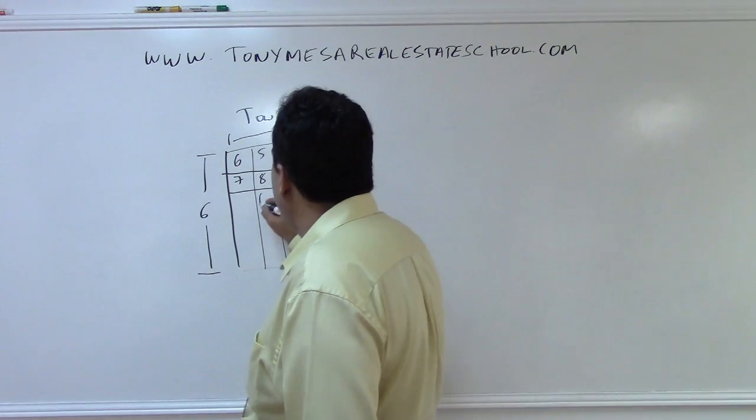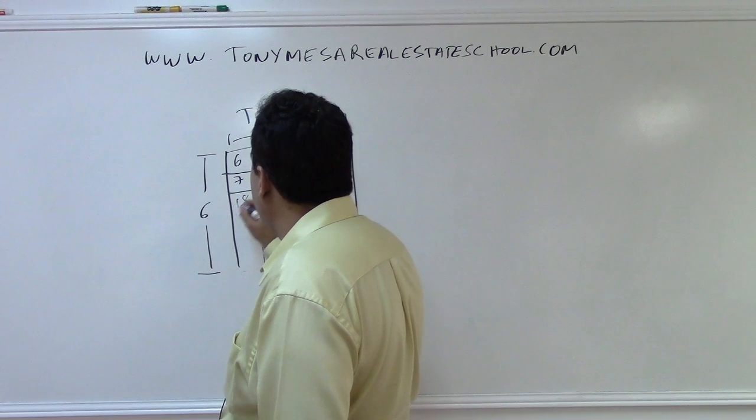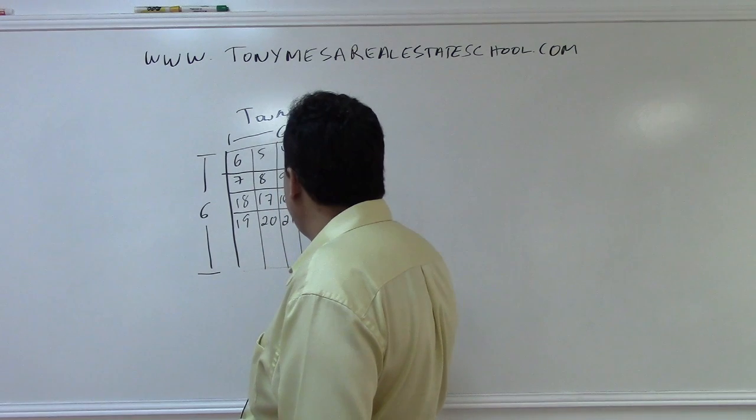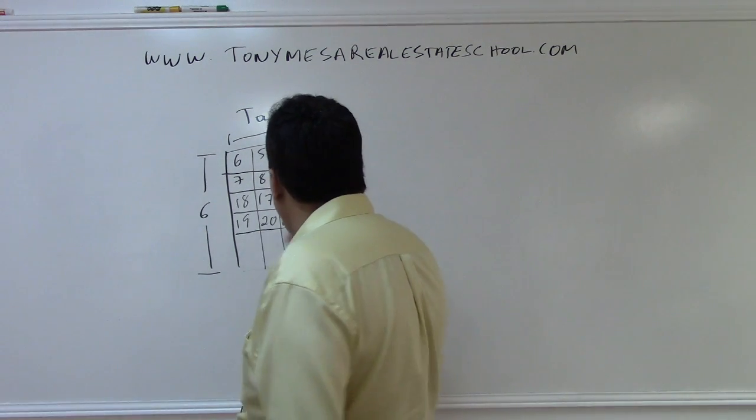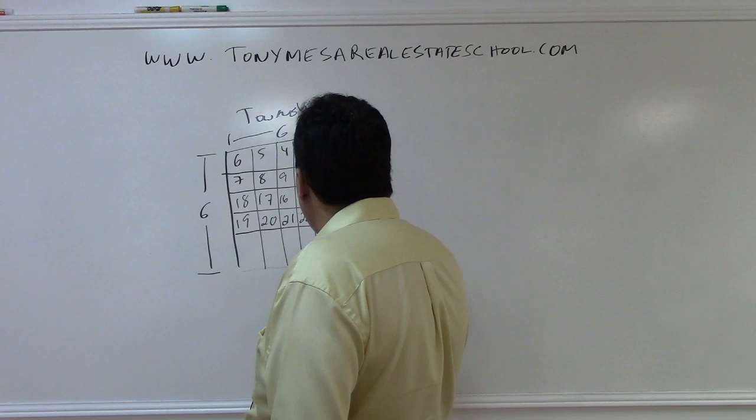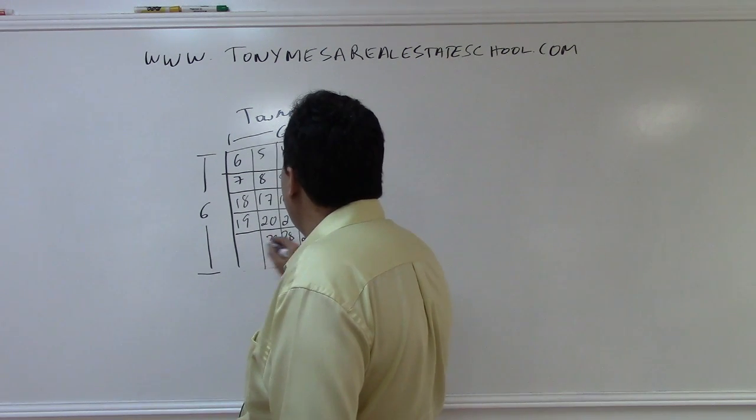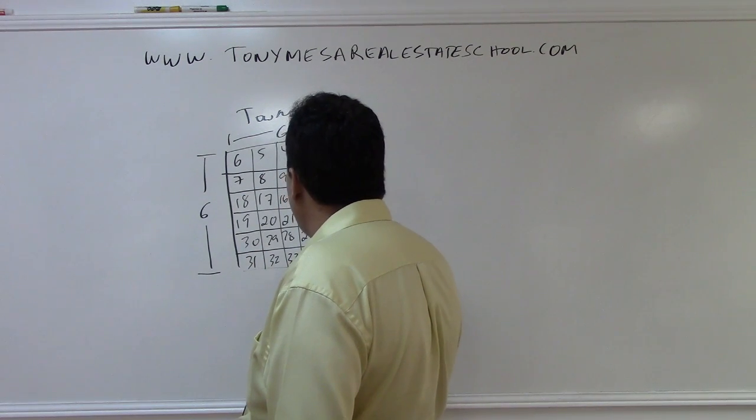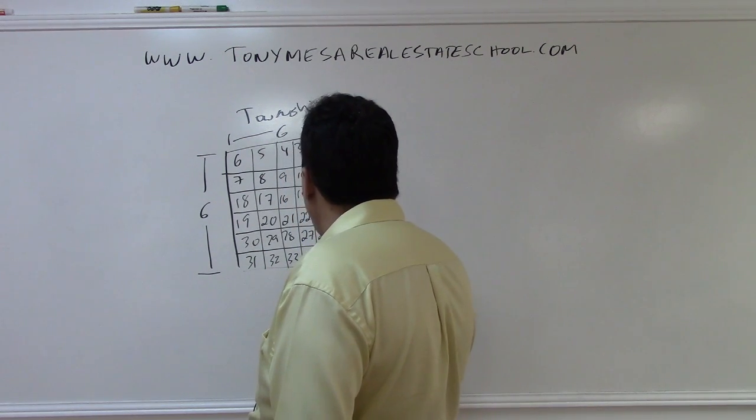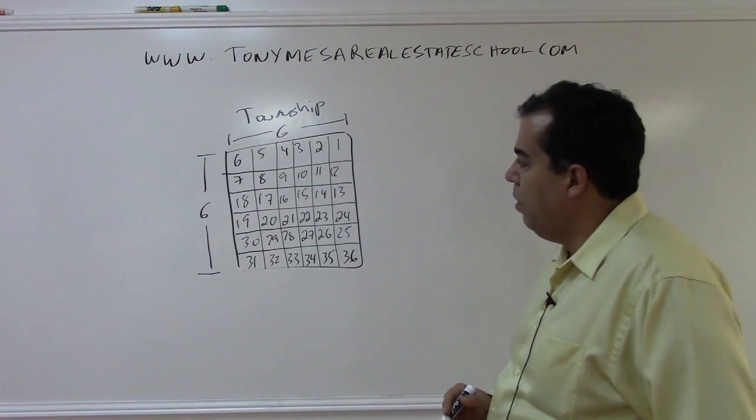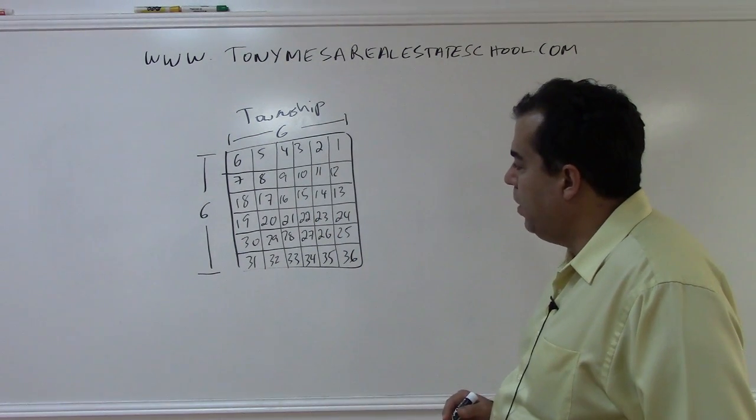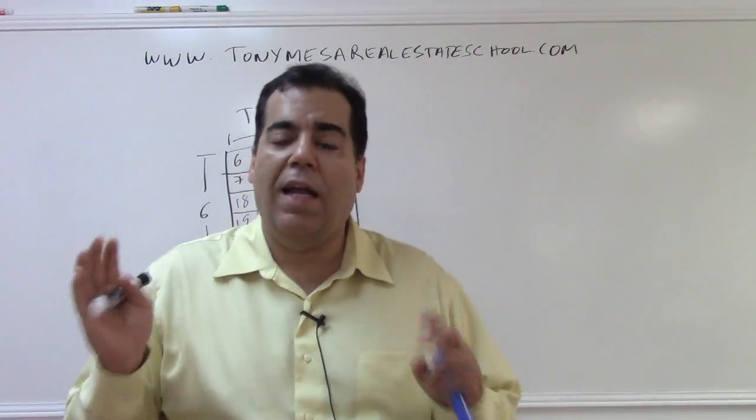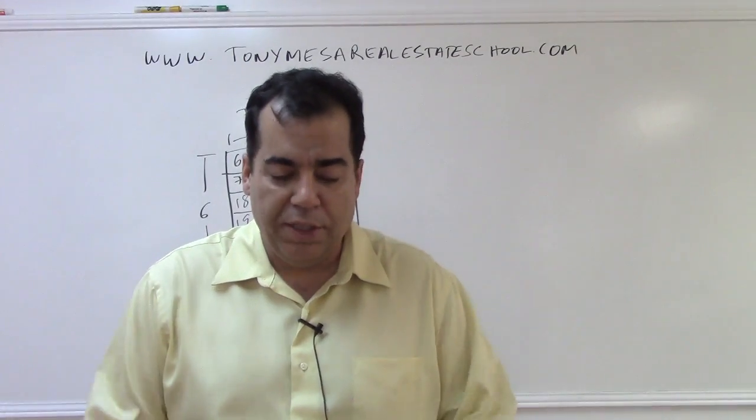So the idea is that you have 36 sections in a township, and it is always the same order. Let me finish drawing this, and then I'll keep on talking. So I'm drawing this out, and if I don't wind up with 36 sections in a township, then I made a mistake. That is always the order of the sections in a township. So it doesn't matter which township you are in. It could be a township here, over there. Every township, that's always the order of the sections inside a township.